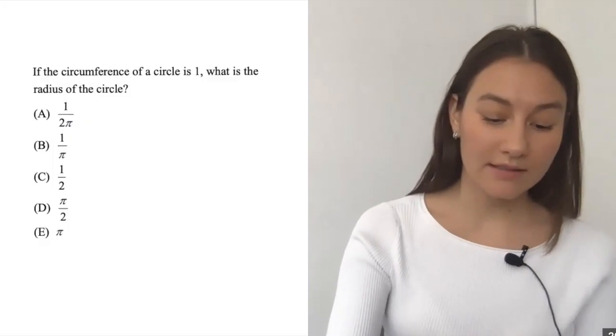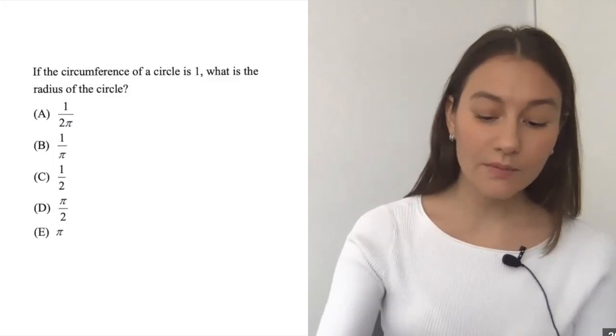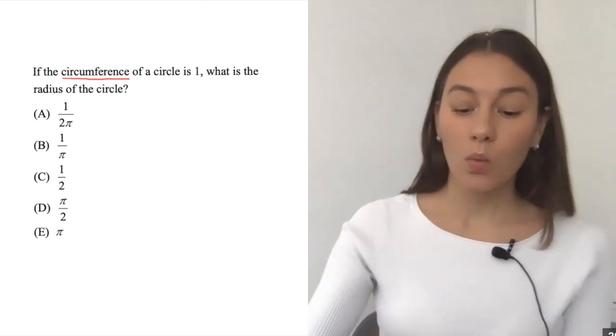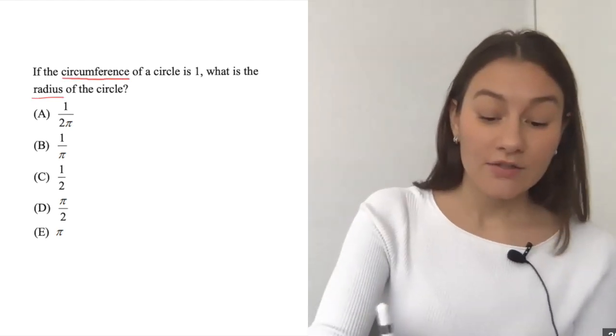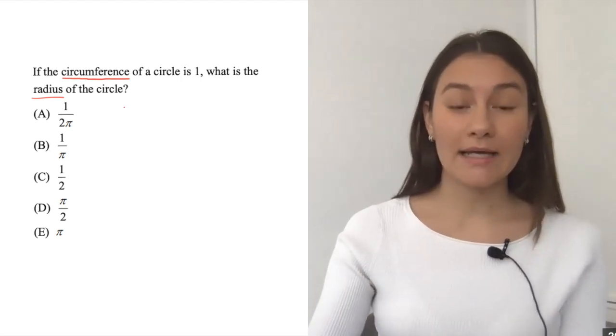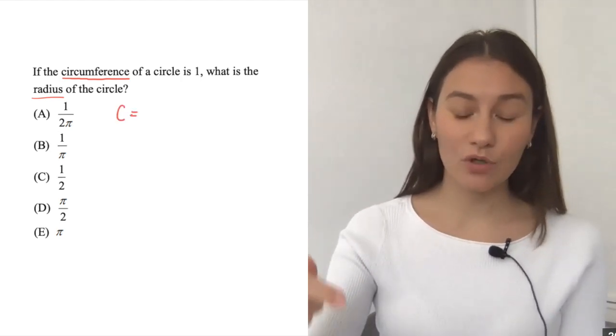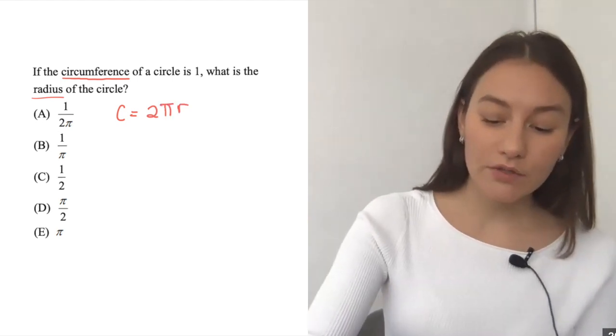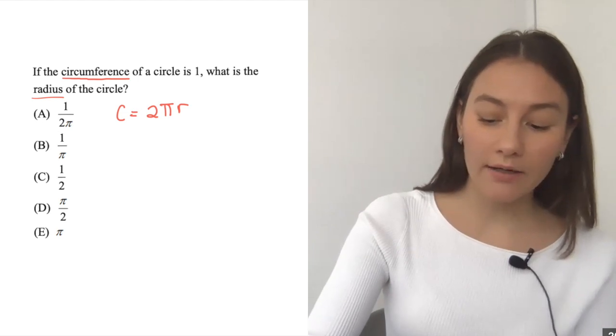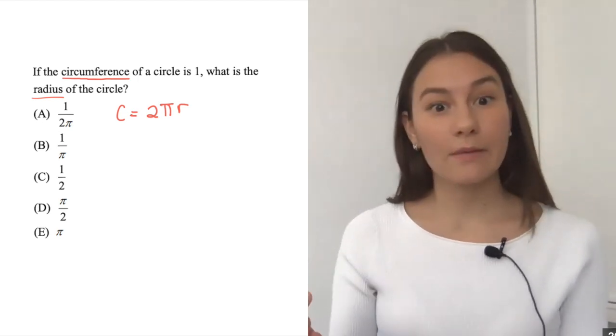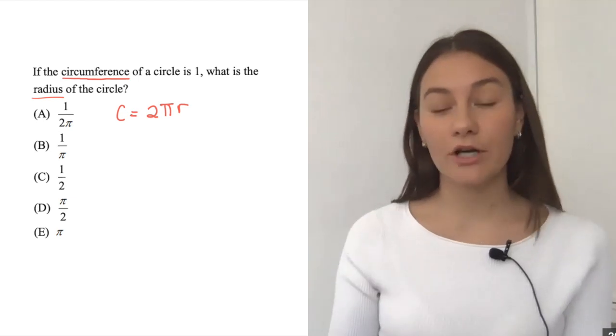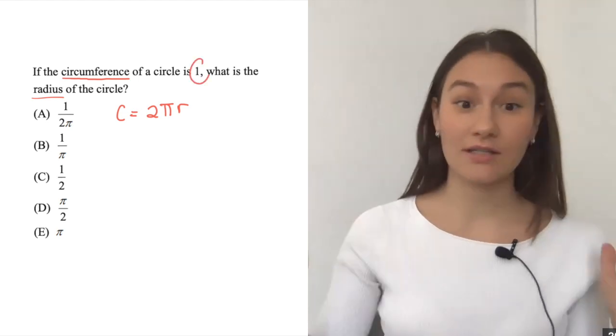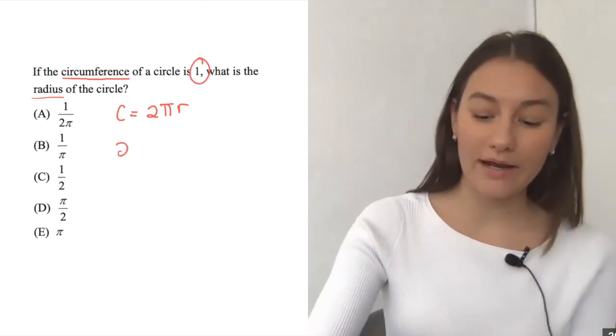Let's jump right into a problem to get started today. So this one says, if the circumference of a circle is one, so I have circumference, what is the radius of the circle? So this is exactly what I mean. I know my circumference is pi times diameter, but in this case it makes more sense to use that other formula with two times pi times r. So circumference is 2 pi r.